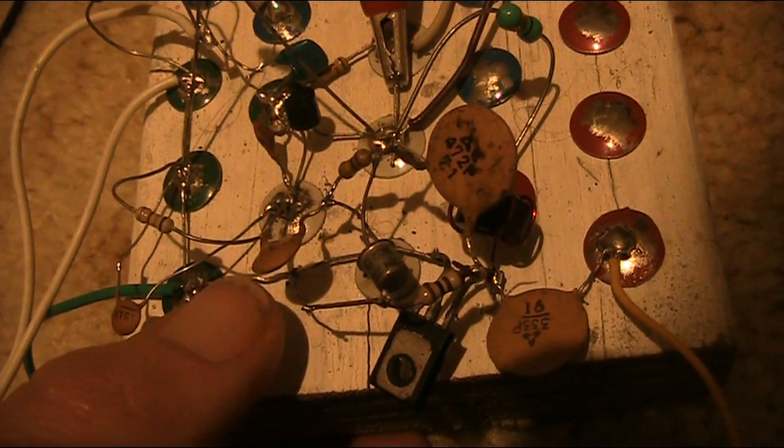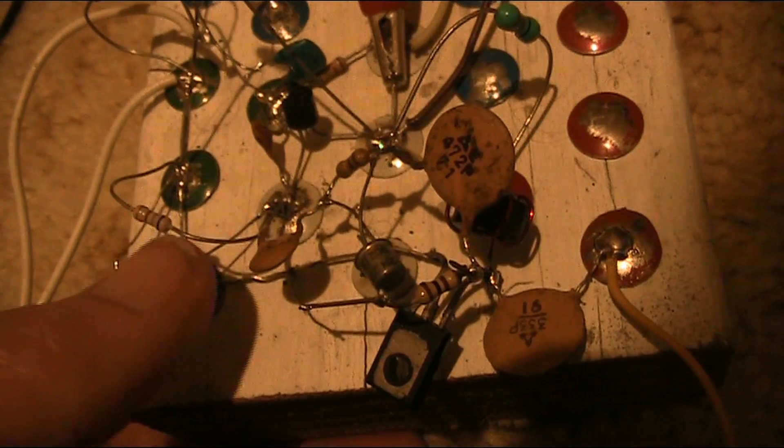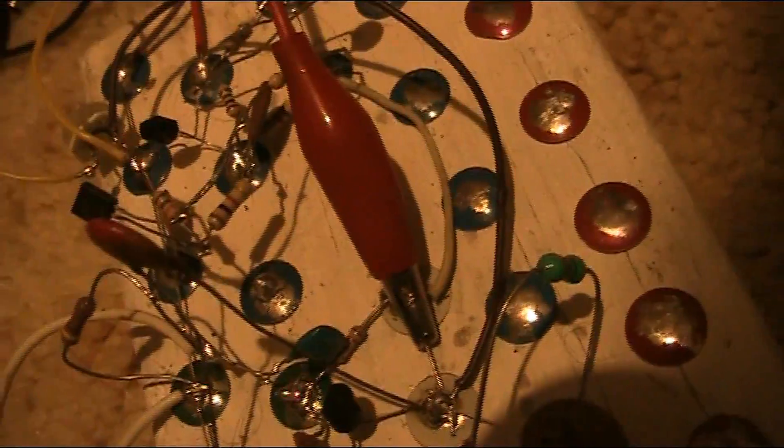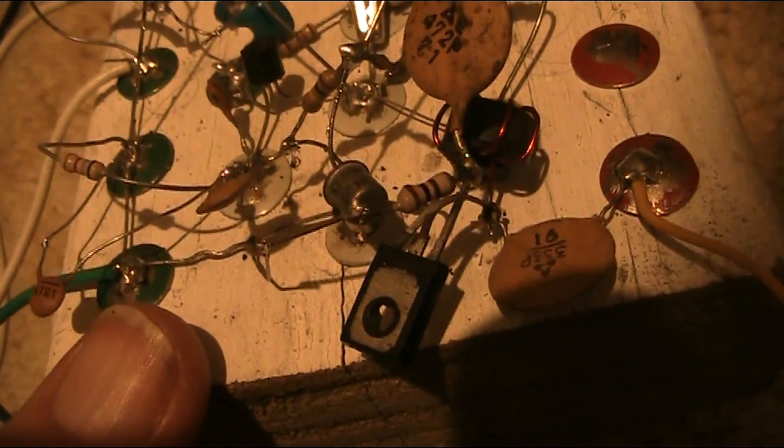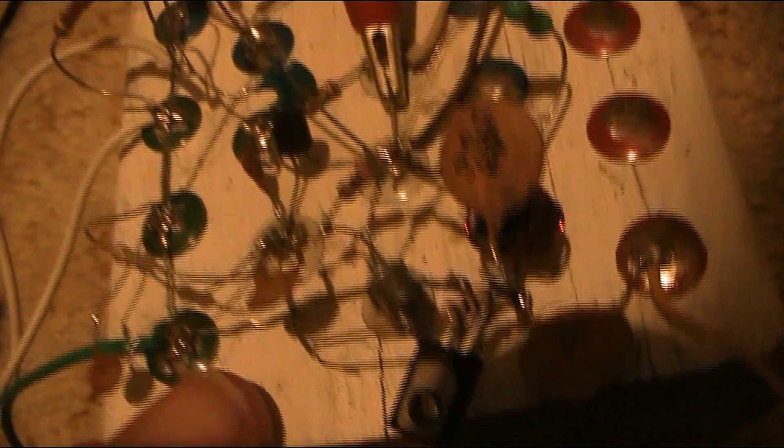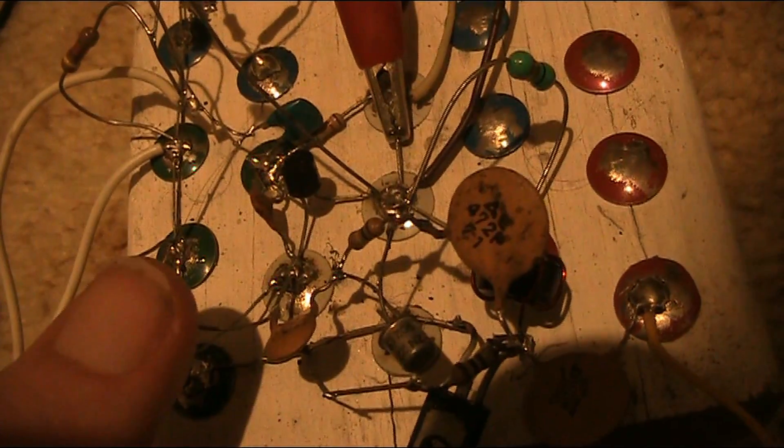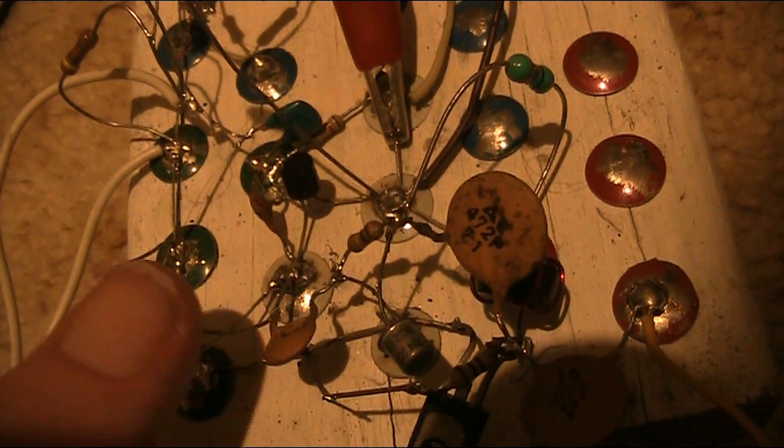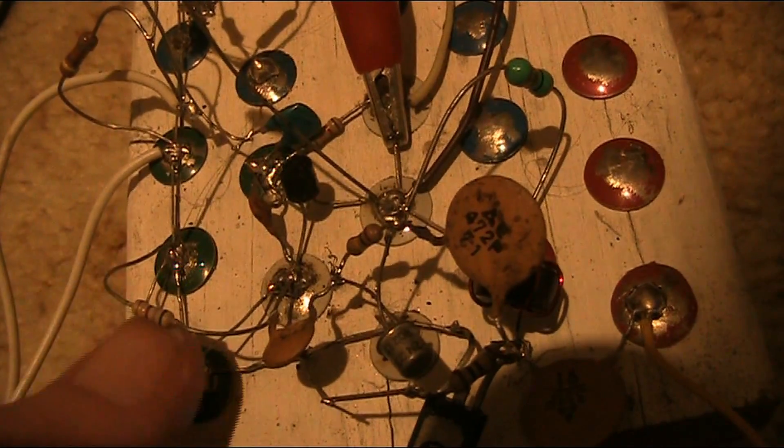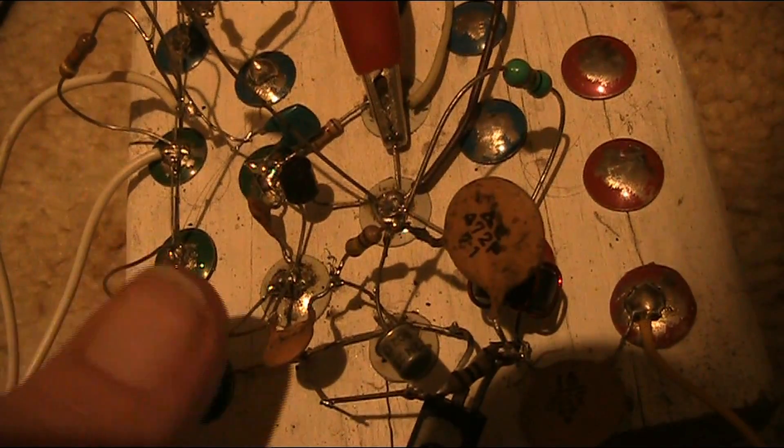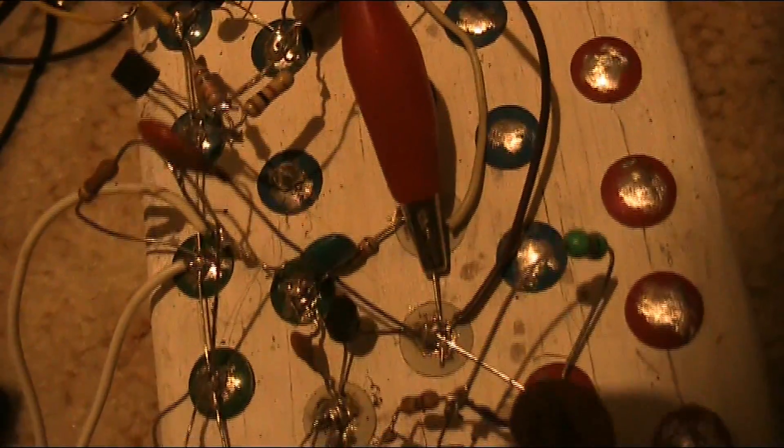But for very simple receivers on medium wave or lower HF bands, then a block of wood like this can be okay. And even if you are careful with the construction, an FM wireless microphone can also work with a block construction like this.